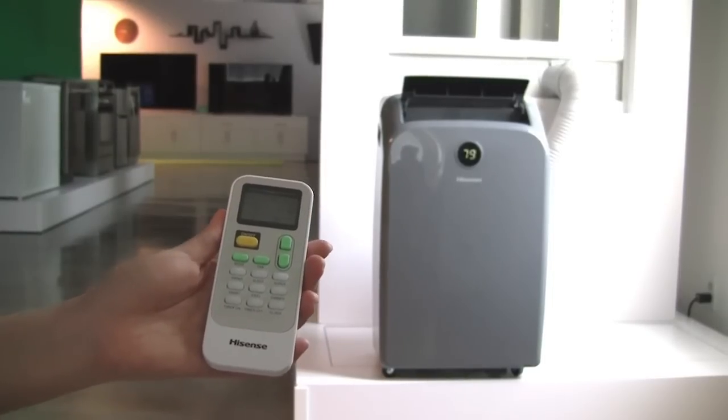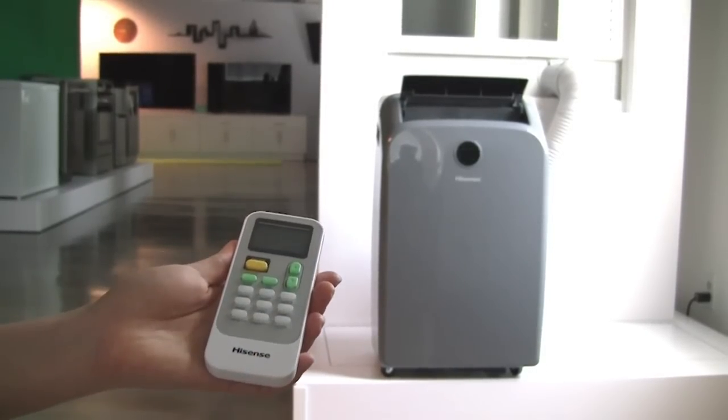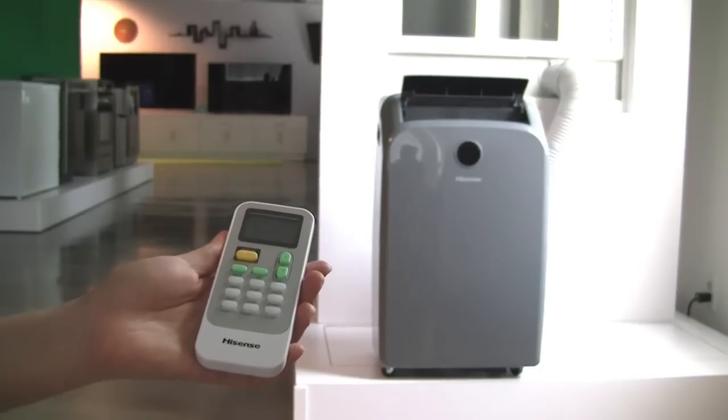Press the Dimmer button to turn off the control panel display. Press the Dimmer button again to turn it back on.